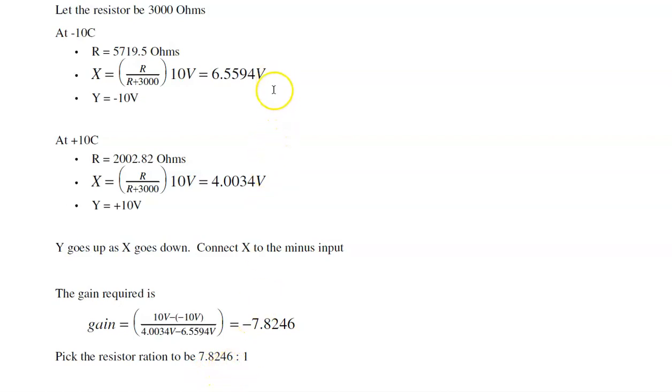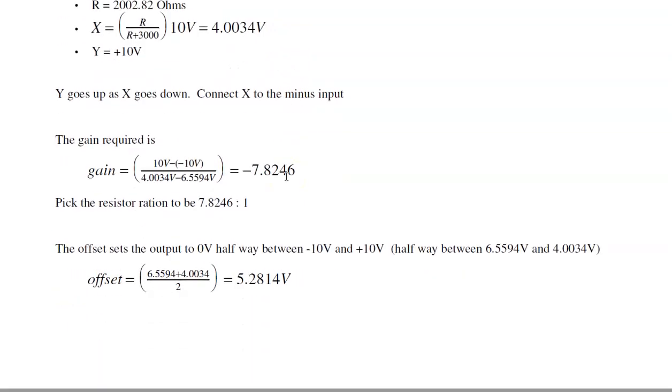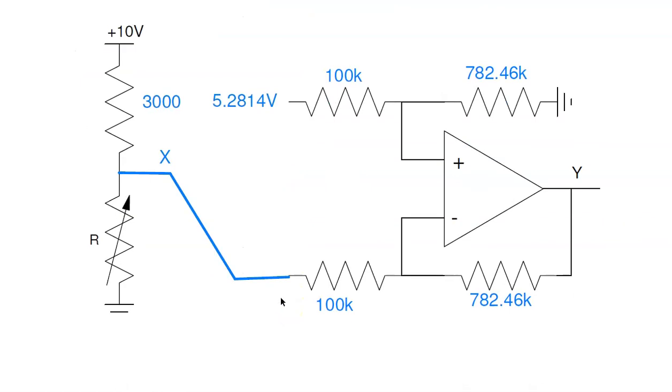So pick the resistor to be 7.8 to 1. And the offset: I want the output to be 0 at mid-band. That's the average between these two. The offset will be the average of the two voltages, 5.28 volts. That gives you this circuit. A gain of 7.8, offset of 5.28, going to the minus input. So Y will go from minus 10 volts to plus 10 volts as temperature goes from minus 10C to plus 10C.